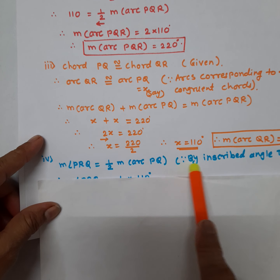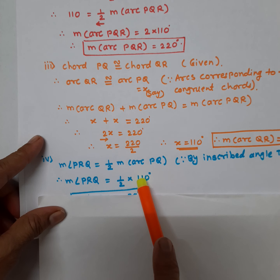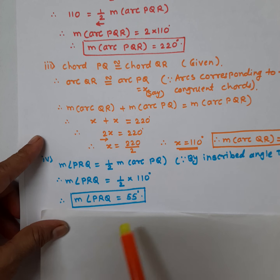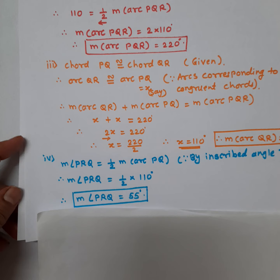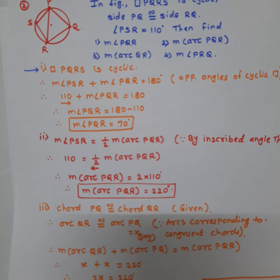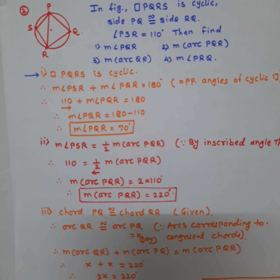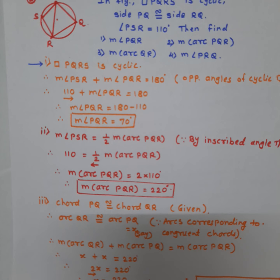Angle PRQ is the inscribed angle and arc QR is its intercepted arc. By the inscribed angle theorem, angle PRQ equals half of arc QR, which is half of 110. Therefore, major angle PRQ is equal to 55 degrees.